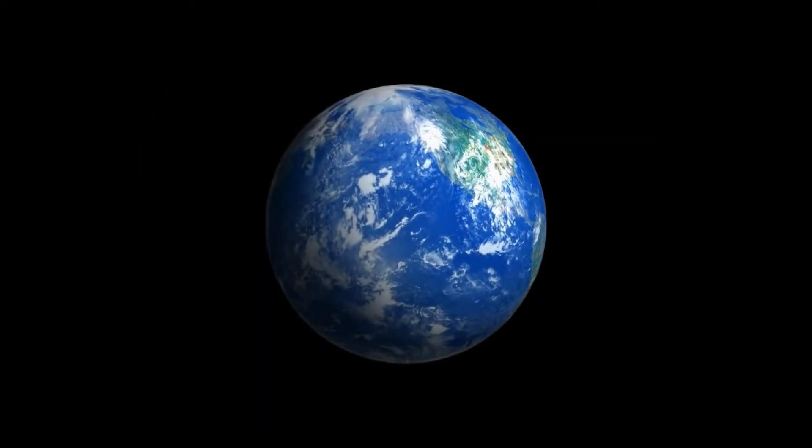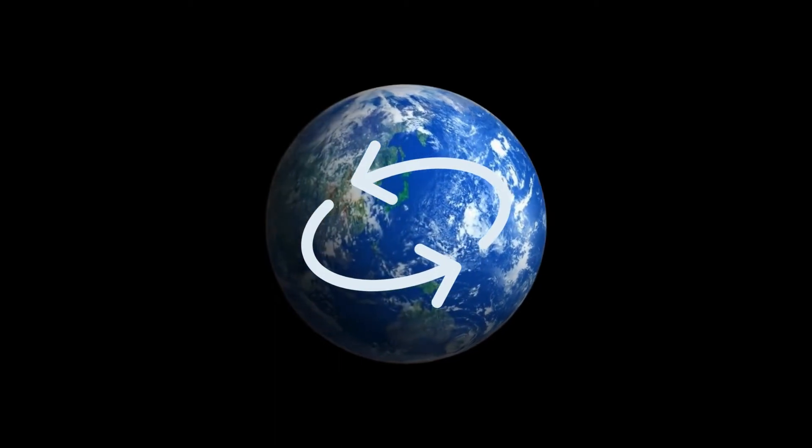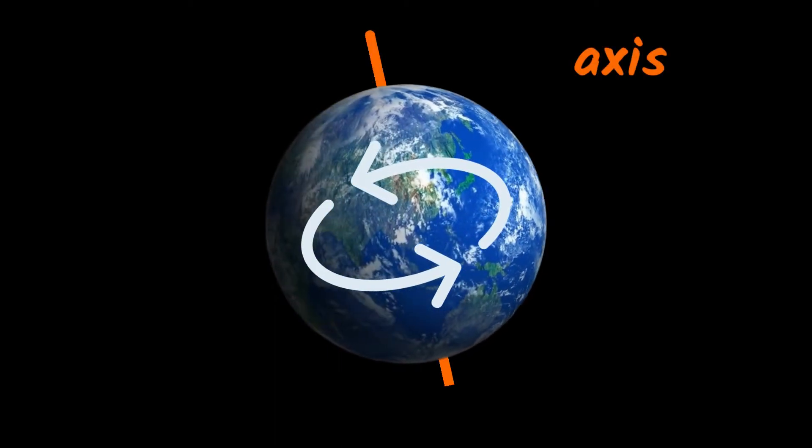We have day and night because the Earth is always spinning. It rotates around an invisible pole through its middle called an axis.